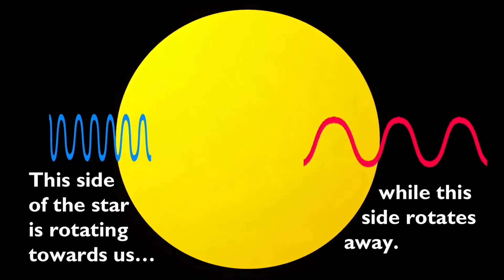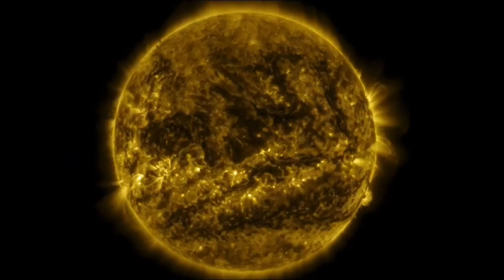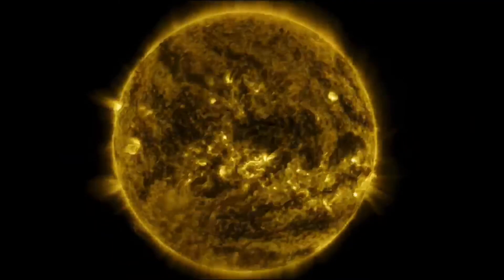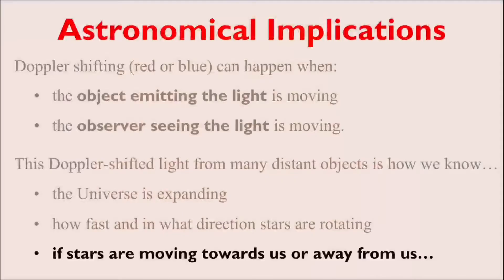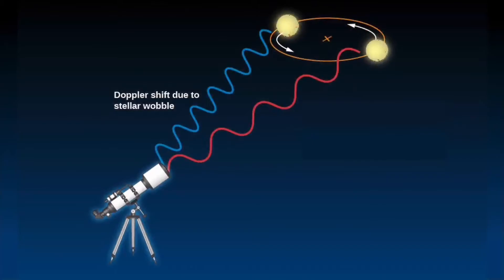We can see an example of this right here in an animation of our own sun. Now, Doppler-shifted light from distant stars can also tell us if the star is moving towards us or away from us. And this can actually help with the detection of exoplanets.